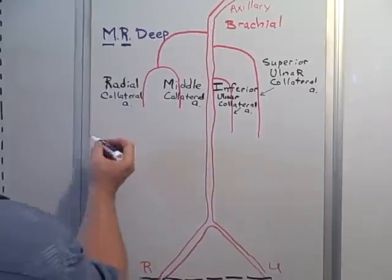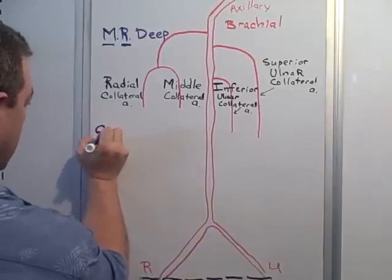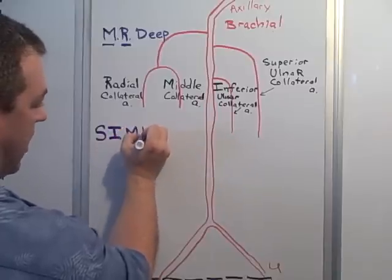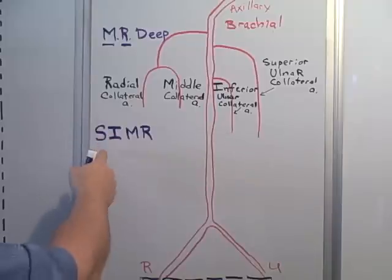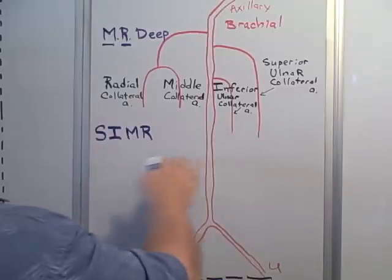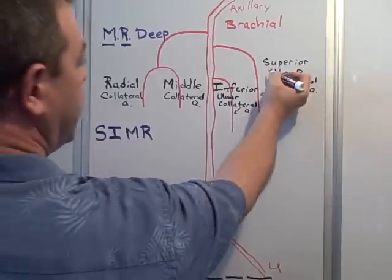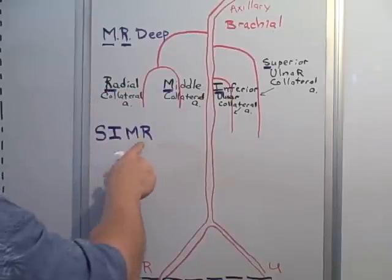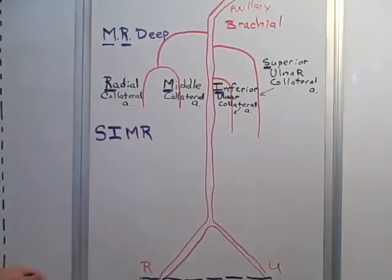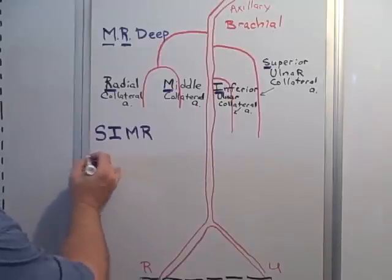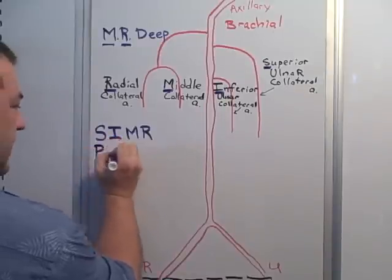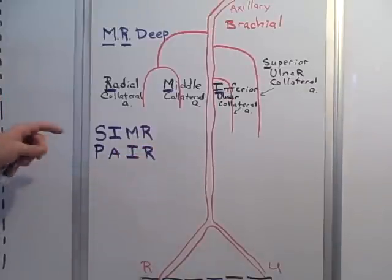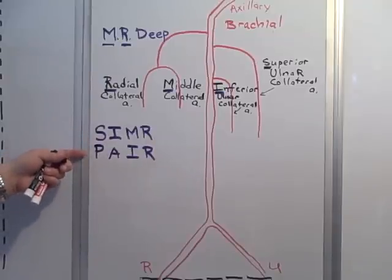This makes up the second mnemonic: SIMR PAIR. We go S-I-M-R, and just like MR you read it left to right — 'simmer' — but it goes medial to lateral: S-I-M-R. The recurrent arteries pair is written directly below: P-A-I-R. At the top we have the collateral arteries, on the bottom we have the recurrent arteries.